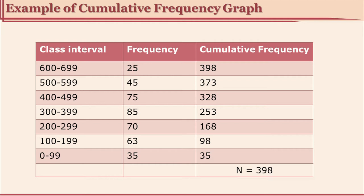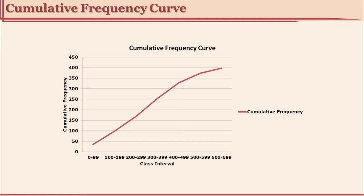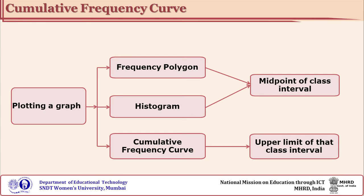If you plot a curve it would look like this — it goes on increasing and then reaches the highest peak at 398. It is a curve, and if you put a perpendicular from any point on the x-axis to the y-axis it tells you how many scores lie below that point. Note that while plotting frequency polygon and histogram we use the midpoint, but while plotting the cumulative frequency curve we take the upper limit of each class interval — and that is why we get a curve.